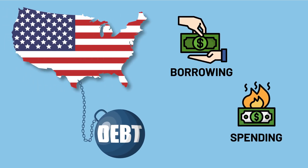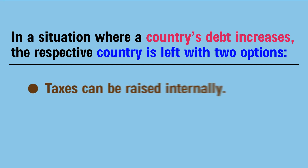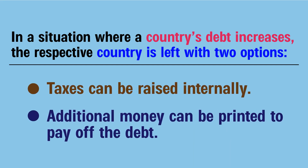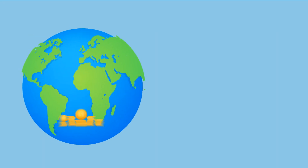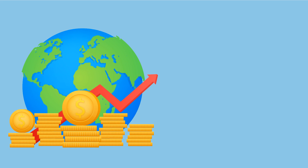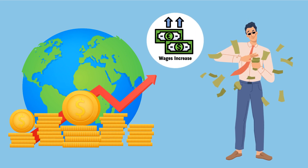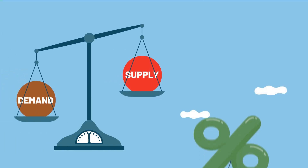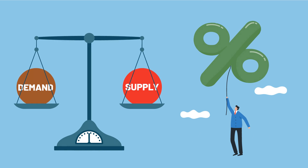National debt is another factor — a nation's borrowing and spending can increase debt, leaving the country with two options: raise taxes internally or print additional money to pay off the debt. The demand-pull effect states that in a growing economy, as wages increase, people have more money to spend on goods and services. The resulting increase in demand causes companies to raise prices to balance supply and demand.